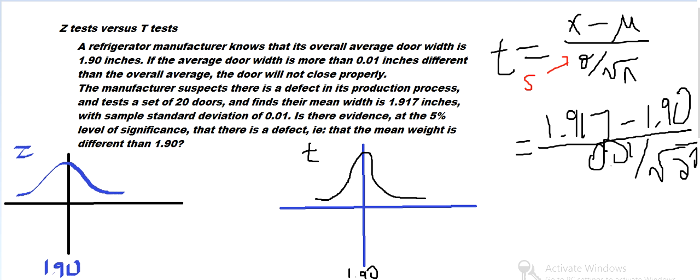And then we divide by the standard deviation over square root of sample size, square root of 20. And that gives, pop it in the calculator, and that gives, I'm getting 7.60. So that's relatively big.